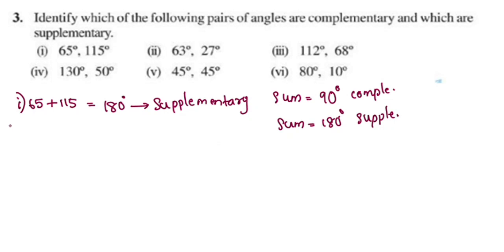Second one: 63 plus 27. 63 plus 27 equals 90 degrees.